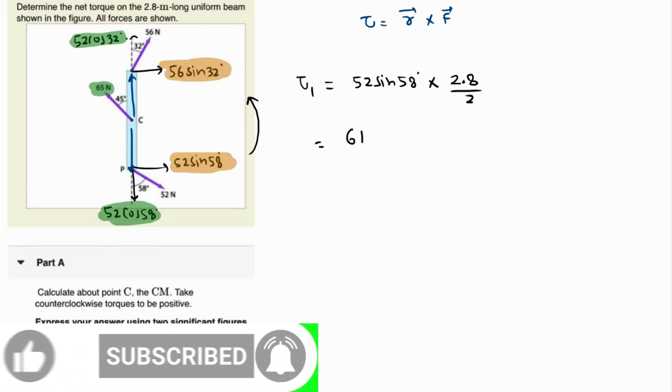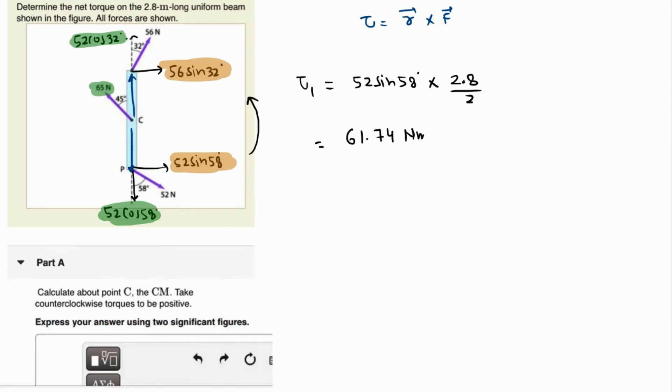And what about tau 2? Tau 2 will be 52 sine of 32 degrees times 2.8 over 2. So this will come out as 52 times sine of 32, coming as 38.58 newton meters.